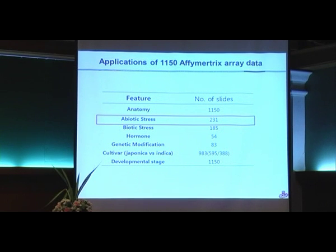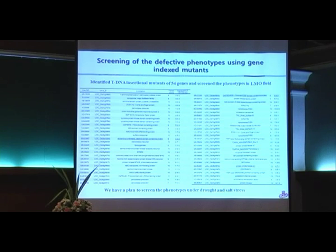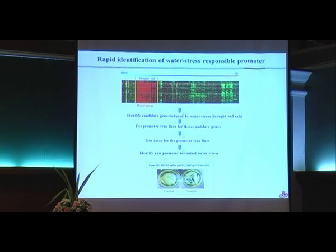Another application uses abiotic stress data. Using the database for abiotic stress, we identified drought and salt co-responsive genes through multiple comparisons. We are doing systematic functional genomic analysis with loss-of-function mutants of these genes, and we currently have 50 mutant lines undergoing detailed functional analysis. We also used this gene data to identify promoters using promoter trap lines with a GUS assay, identifying one line showing drought-inducible expression. This promoter could be used to improve crops with enhanced drought tolerance.